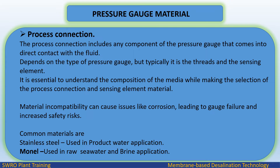Process connection: The process connection includes any component of the pressure gauge that comes into direct contact with the fluid — typically the threads and the sensing element. It is essential to understand the composition of the media when selecting the process connection and sensing element material, as material incompatibility can cause corrosion, leading to gauge failure and increased safety risks. Common materials are stainless steel, used in product water applications, and Monel, used in raw seawater and brine applications.